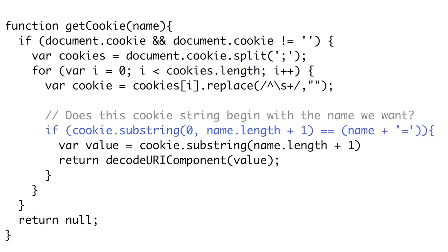Since the browser places a space after the semicolons, our cookie string may have a space preceding the actual name of the cookie. We can remove it with a regular expression replacement that replaces all leading white space with nothing, thereby removing it. Finally, we want to check if the cookie in our loop is the one we're looking for. So we compare our desired cookie name plus an equal sign to the first part of our cookie string. If it matches, then we can extract the latter half of the cookie — the value — and return it. The browser will encode certain characters, so you want to call decodeURIComponent on it to clean it up. If we make it through the loop of all cookies and we don't find a value, we return null.